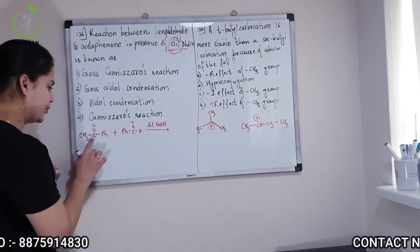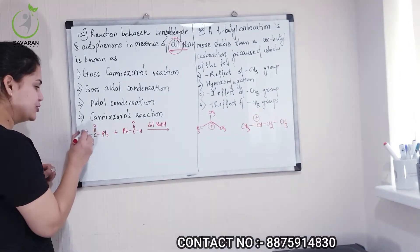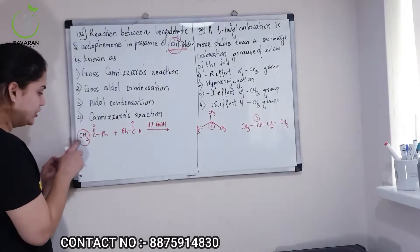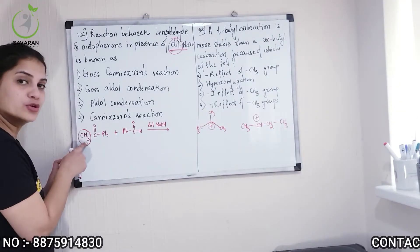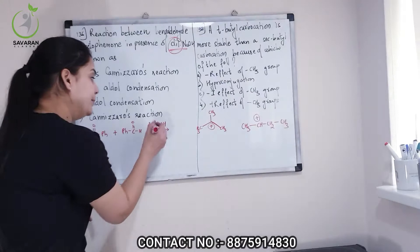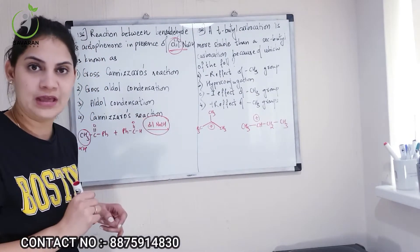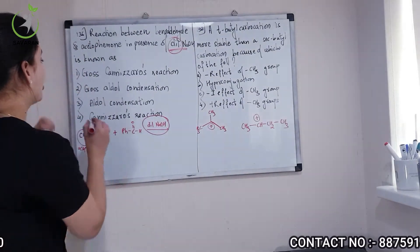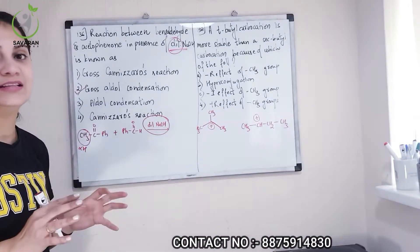Have a look. Now, in this case, what will happen in your carbon - alpha carbon, alpha hydrogen present? So if you have alpha hydrogen present here and you are dilute NaOH, what will happen here? It will be cross aldol condensation.